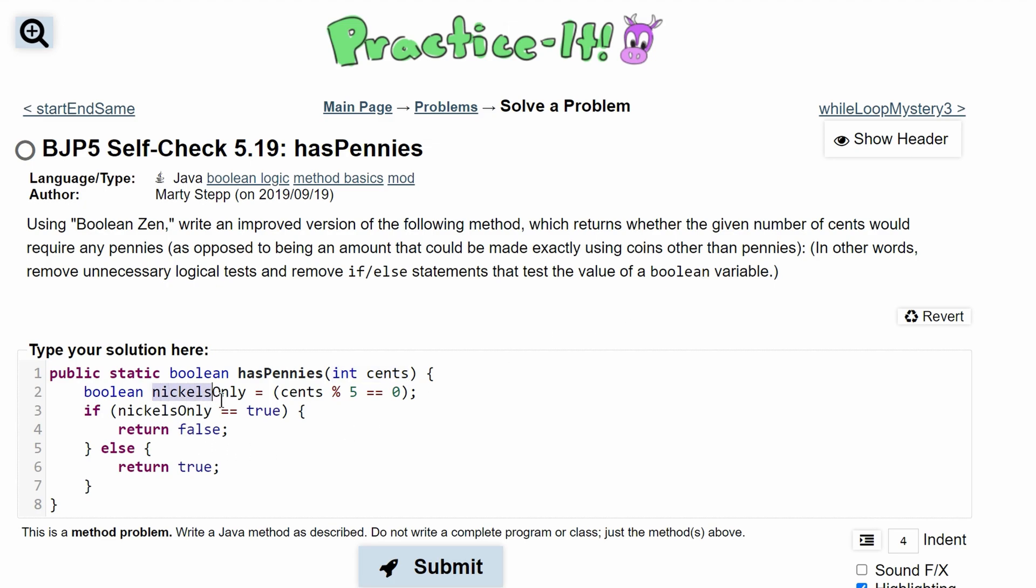The reason we say nickels and they're saying exactly using coins other than pennies is because every other coin can be made from nickels. Like 10 cents is 2 nickels and a quarter is 5 nickels.